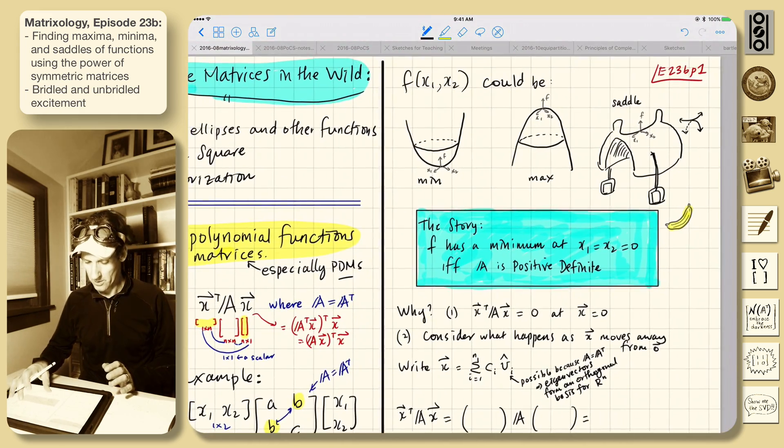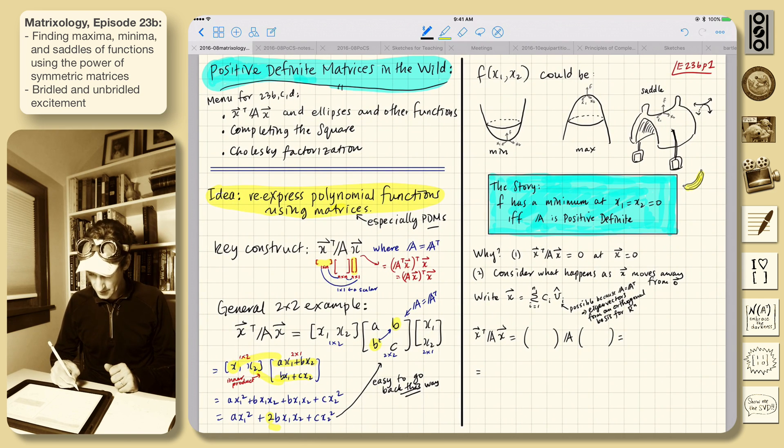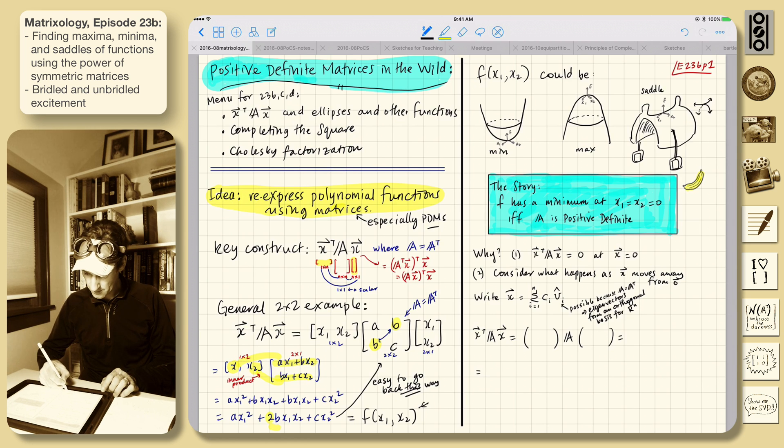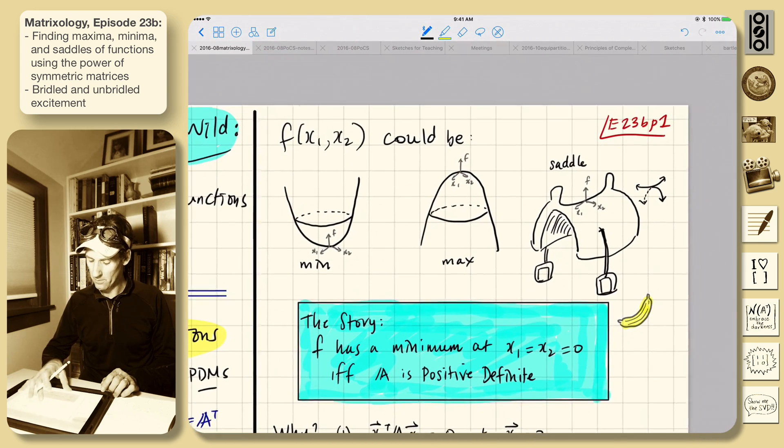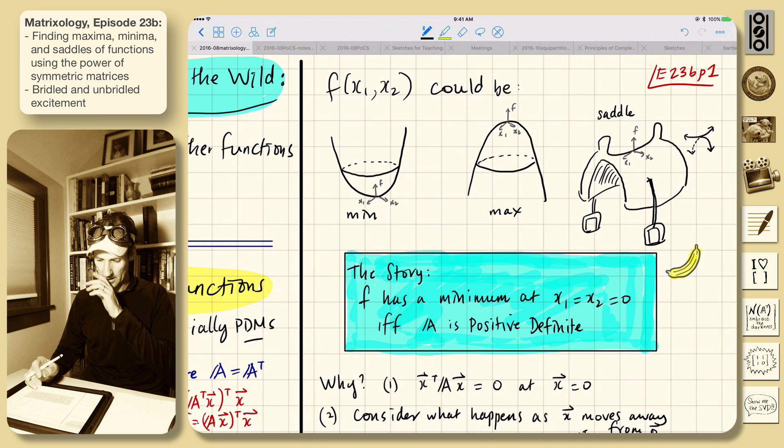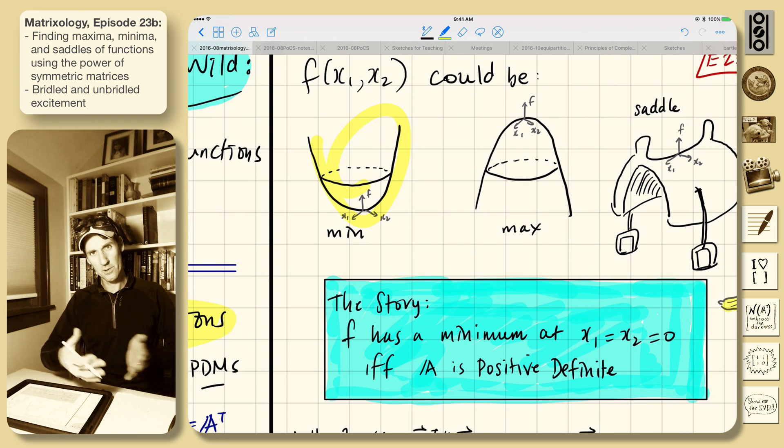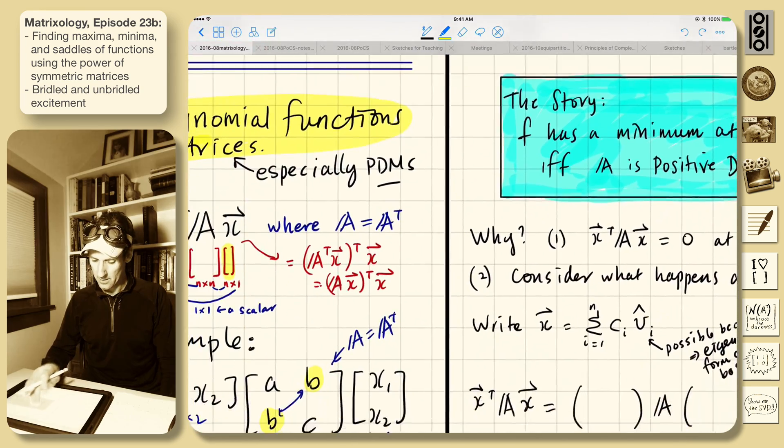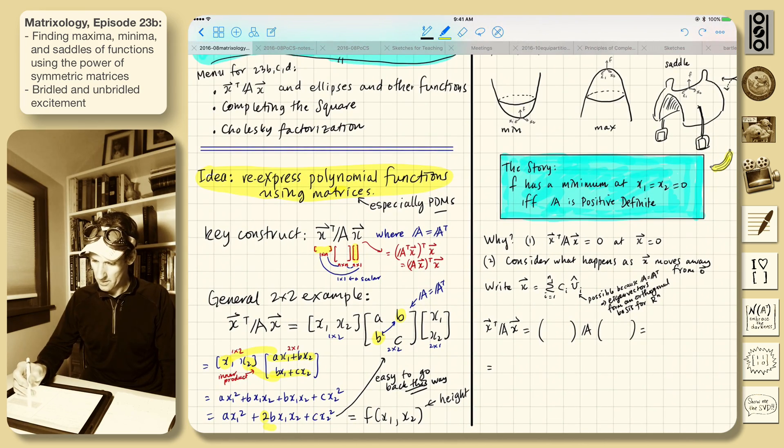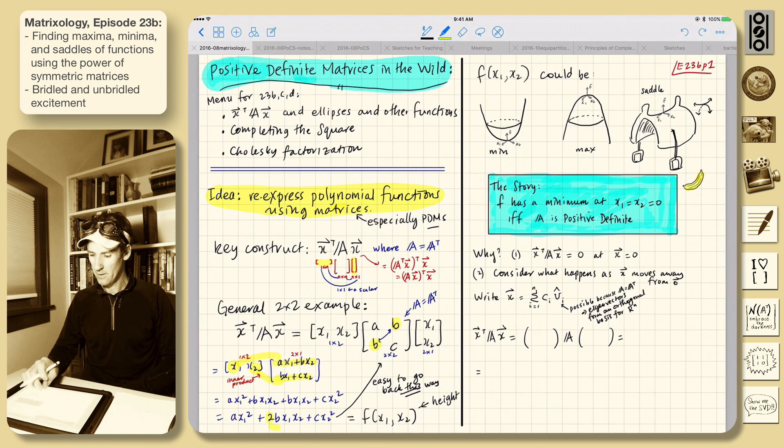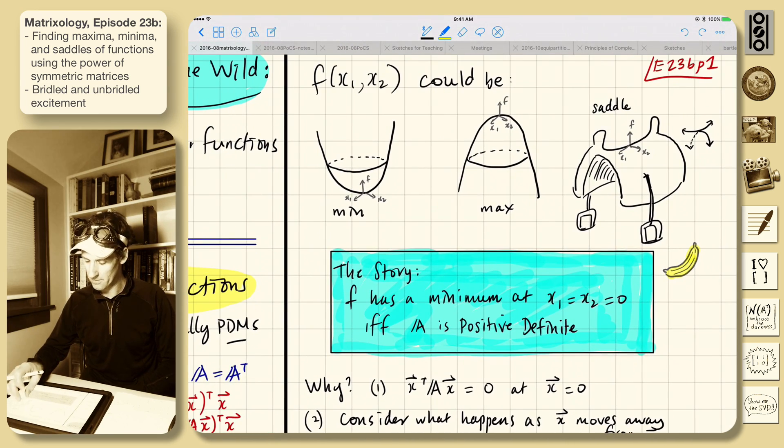So the idea is, I'm trying to show you what this construction does, but if you're given a polynomial, then we can write the X transpose AX version. Okay, so what is this function? Let's say we've got this is some function X1, X2. We put in X1, X2, it gives us some value. Think of that as the height. So it could be, what could this thing be? It's very simple polynomials, order two terms.